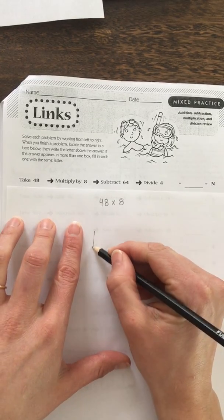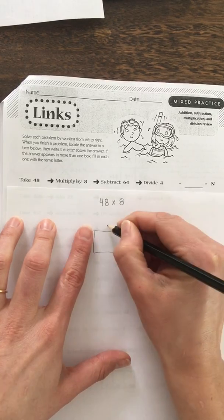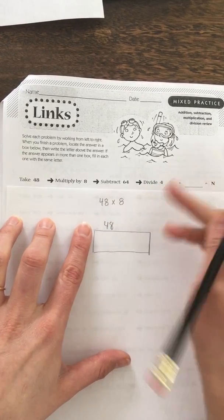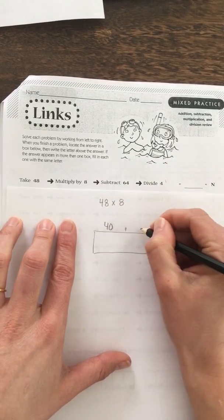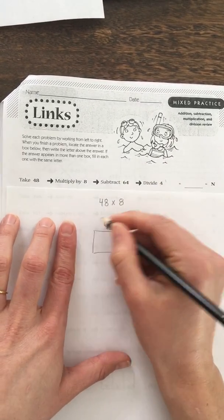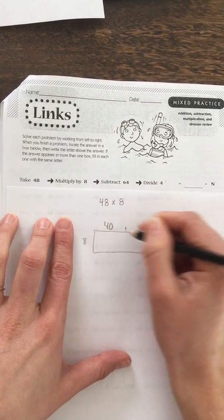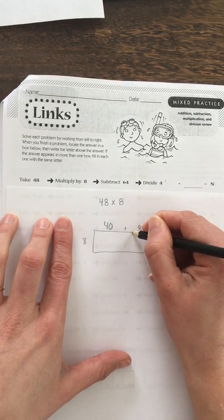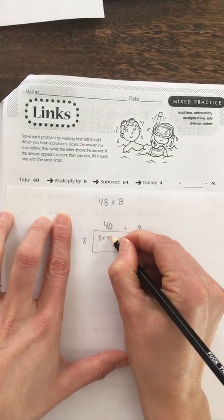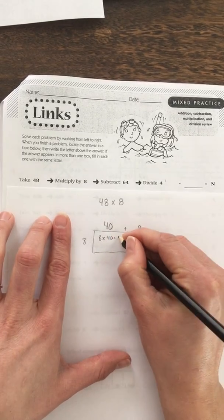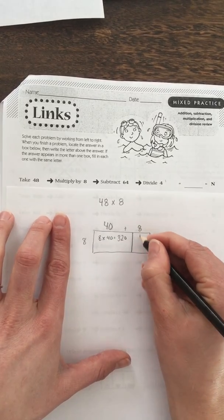So we have 48, not 48, we're going to write that as 40 plus 8. And you can imagine 8 rows of squares each with 48 squares in them. Okay, so if I have 8 rows of 40, 8 times 40, well 8 times 4 is 32, multiply by 10, so attach a 0, 320. 8 times 8 is 64.